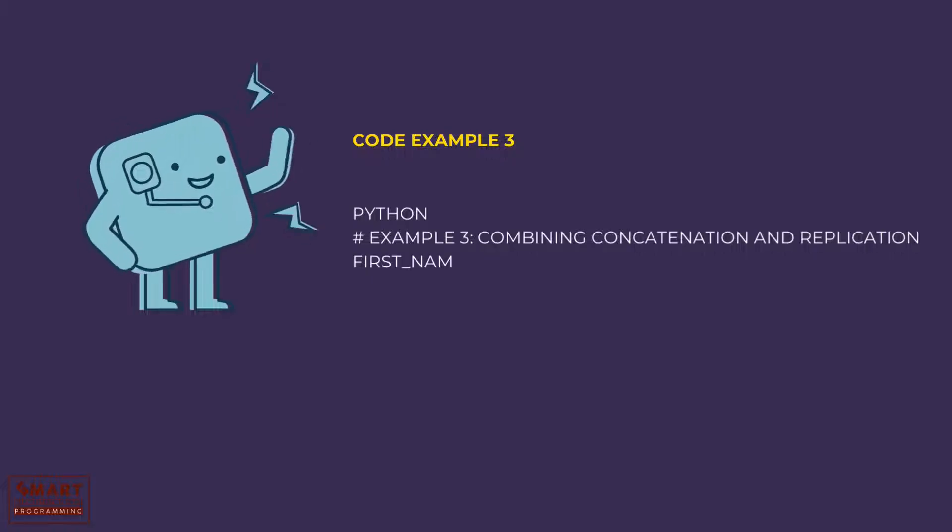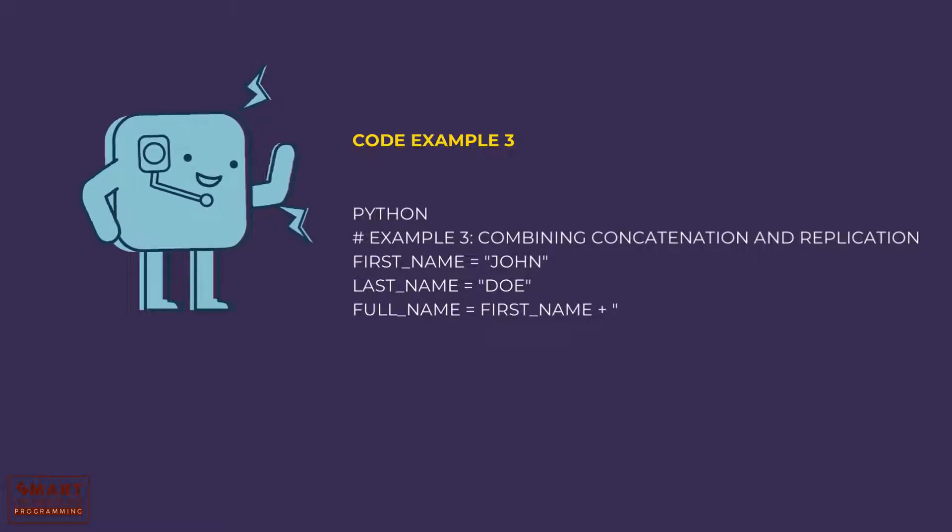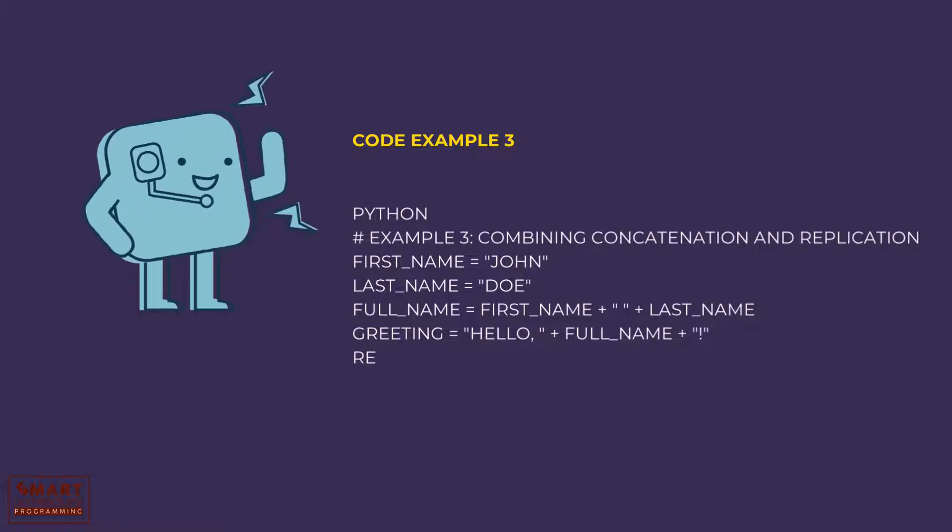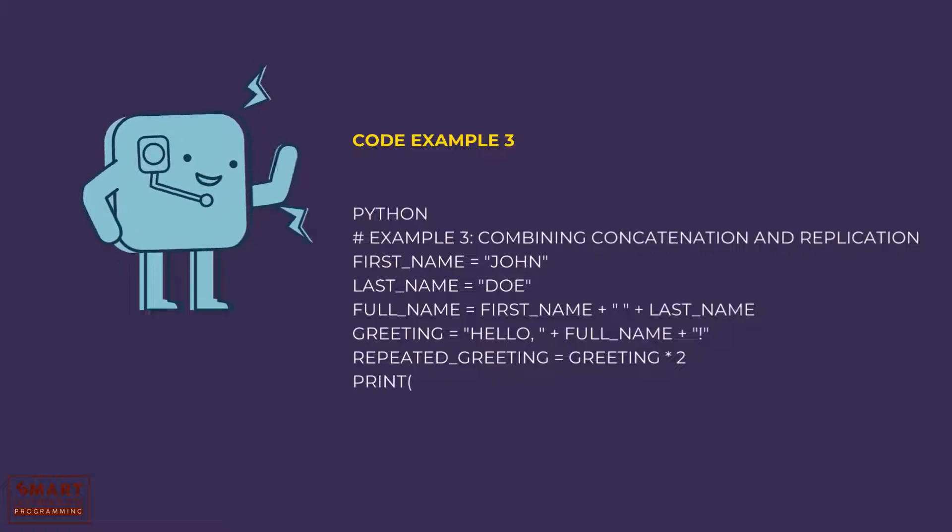first_name = 'John', last_name = 'Doe', full_name = first_name + ' ' + last_name, greeting = 'Hello, ' + full_name + '!', repeated_greeting = greeting * 2, print(repeated_greeting).